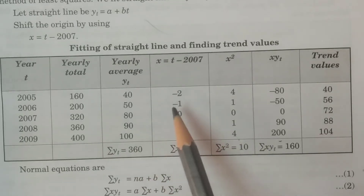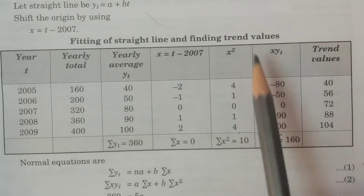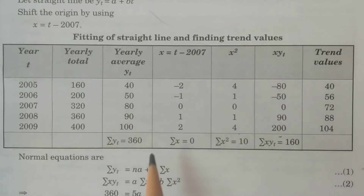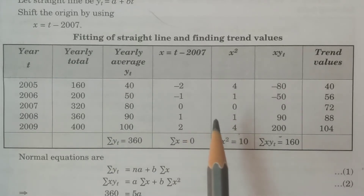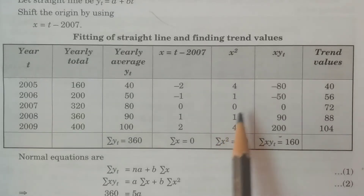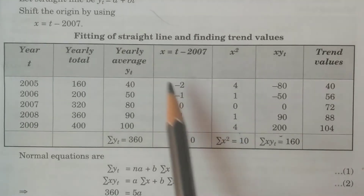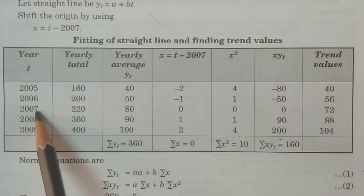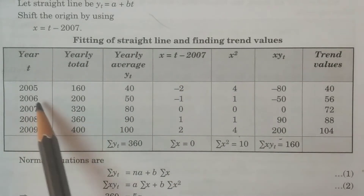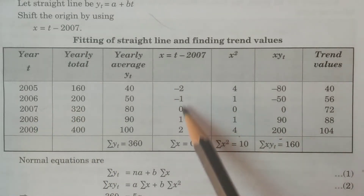Now you have to fit a straight line to obtain the trend values by using the method of least squares. You can consider a second-degree parabola, a power curve, exponential curve, or any mathematical relationship. For simplicity, we have considered x equal to t minus 2007 — the middle year — therefore we get the values minus two, minus one, zero, one, two. Then we calculate x-squared and x times y_t.